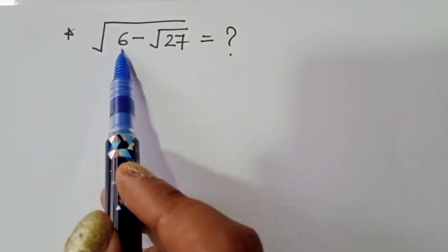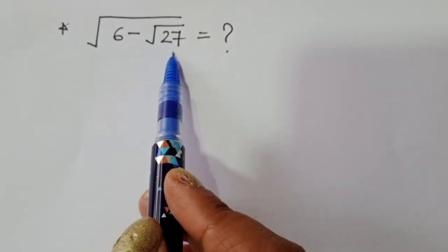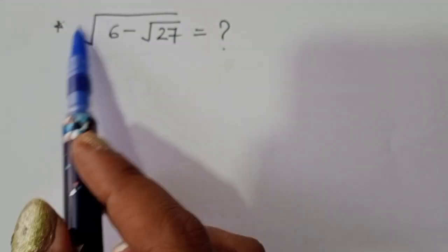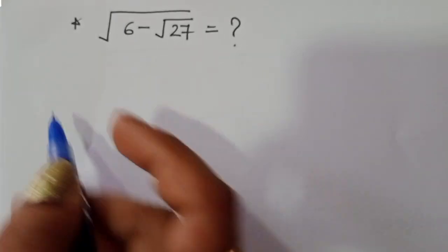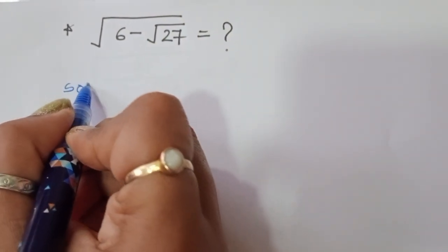The problem is given: square root of 6 minus square root of 27 is equal to what? We have to find out the value. Let's see the solution.